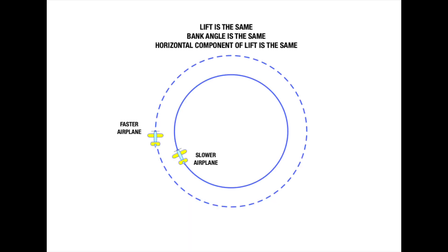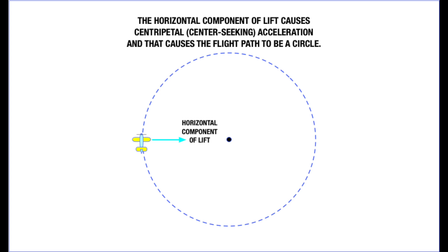If the lift and the bank are the same for the two airplanes, the horizontal component of lift must be the same for the two airplanes. Now, remember that the horizontal component of lift is what causes the plane to turn. We say that it has a centripetal acceleration, which means center-seeking. A higher horizontal component of lift means a tighter turn, in other words, a shorter radius of turn.